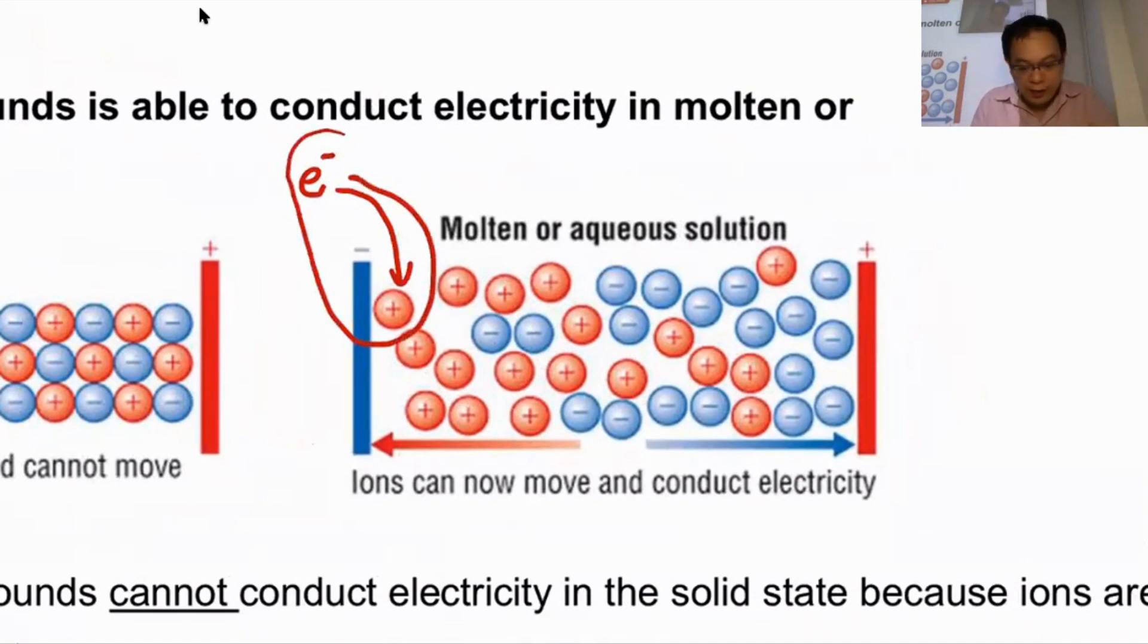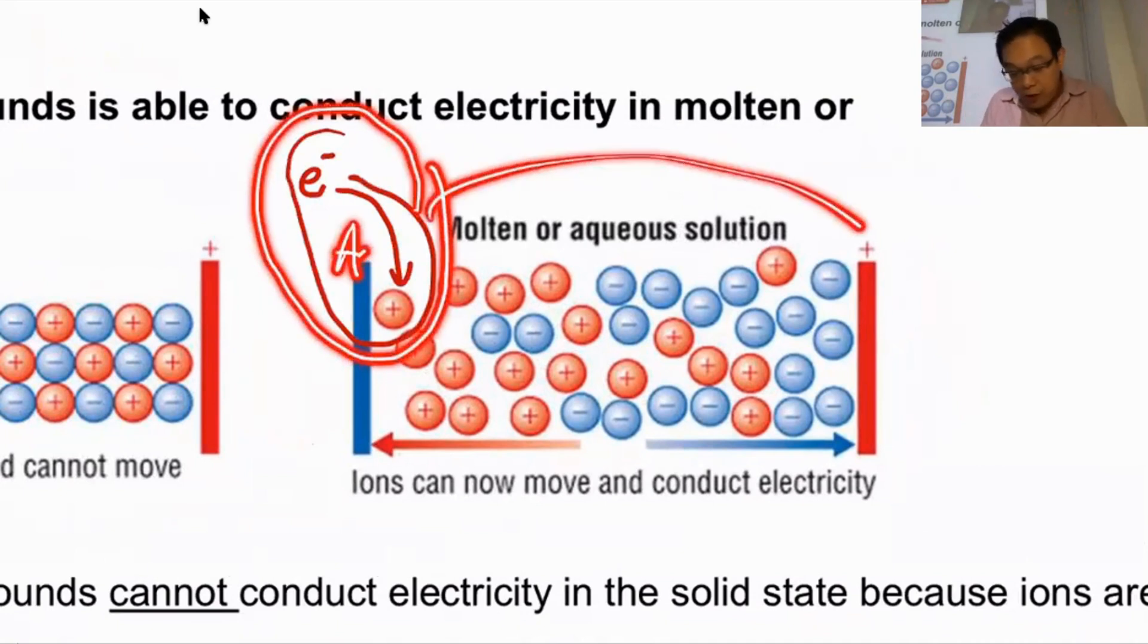Think of it as a minion - you have to carry the electron from point A to point B. Therefore, electrical current carries across the board. That's how you conduct electricity.